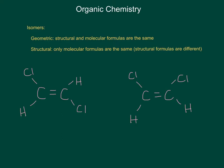So let's take a look at what we mean by different structural and molecular formulas. We have two compounds, one on the left and one on the right. For the molecular formulas — which I'm going to write in green — the left compound has two carbons, two hydrogens, and two chlorines. The right compound also has two carbons, two hydrogens, and two chlorines. So the molecular formulas are exactly the same.